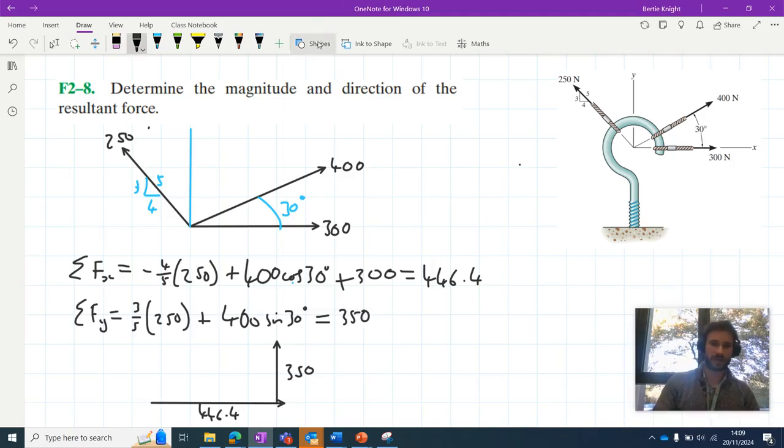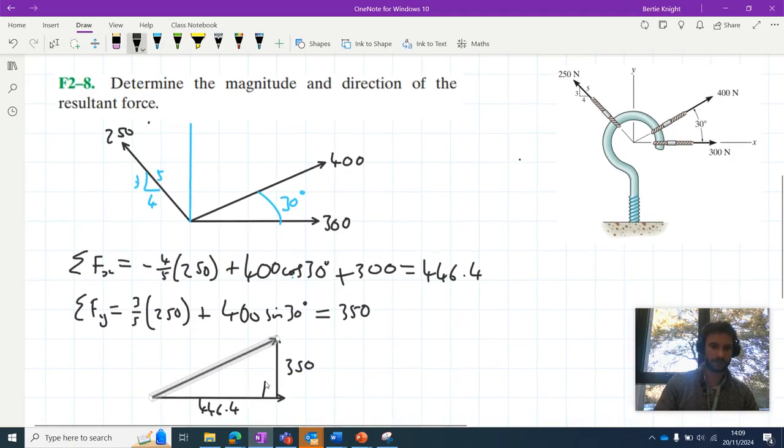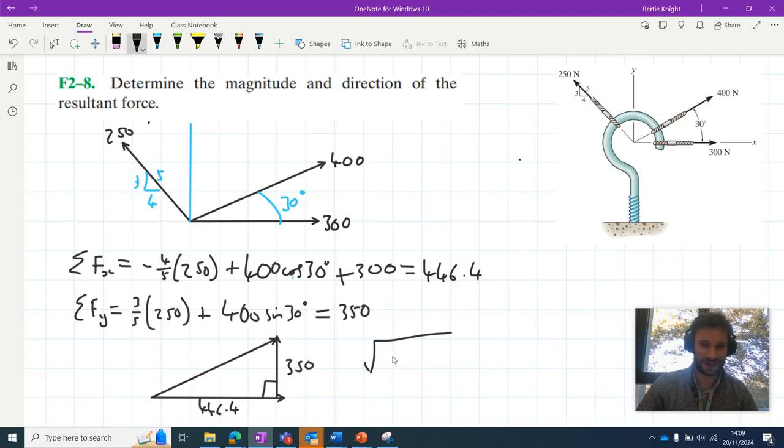And what we're being asked to determine then is its magnitude, which is the hypotenuse here. Evidently, to solve for its magnitude, we can use Pythagorean theorem. So we can use this idea here, 446.4 squared plus 350 squared, all square rooted. And when we bung that in our calculator, that gives us 567.3 newtons. Let's just add that to our diagram, 567.3.